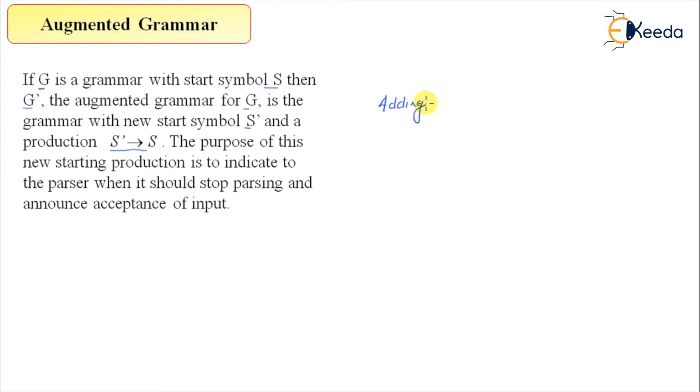Here we are adding something new. The new thing that we are adding is a new start symbol S'. The name doesn't have to be S', it can be anything, but we are adding a new start symbol. And we're also adding a production rule. That production rule is S' derives S. So we're adding two things: a new start symbol and a production rule.